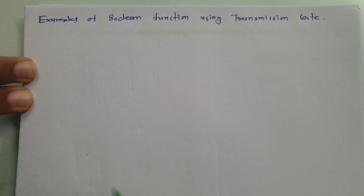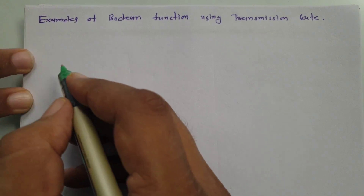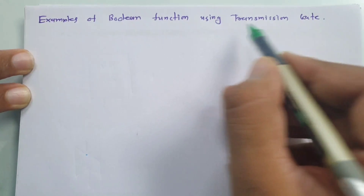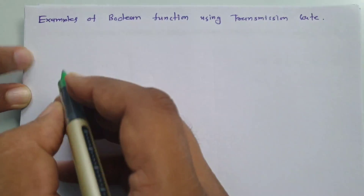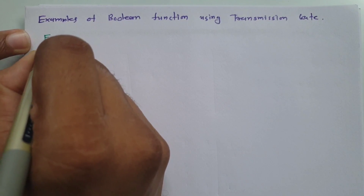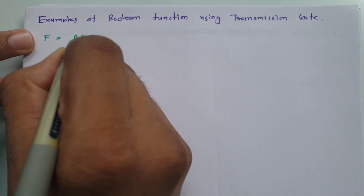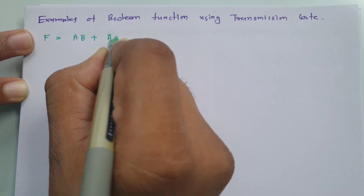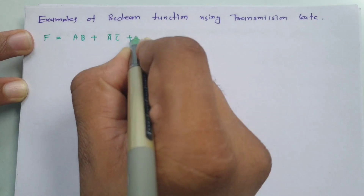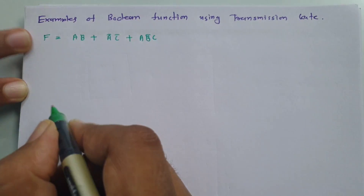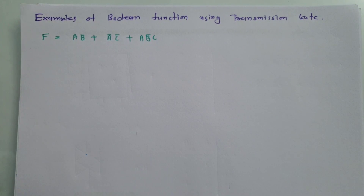Welcome to VLSI lecture series. I, Professor Itesh Dolakya, am going to explain examples of Boolean function using transmission gate. The first question is the Boolean function f given by a·b + ā·c̄ + a·b̄·c, and we are going to implement this using a transmission gate.